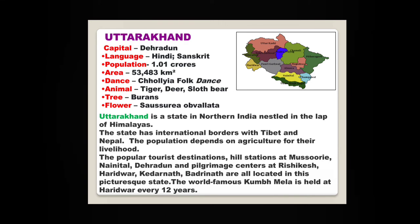Uttarakhand — capital Dehradun. Uttarakhand is a state in northern India, nestled in the lap of the Himalayas. The state has international borders with Tibet and Nepal. The population depends on agriculture for their livelihood. Popular tourist destinations include hill stations at Mussoorie, Nainital, Dehradun, and pilgrimage centres at Rishikesh, Haridwar, Kedarnath and Badrinath, all located in this picturesque state. The world-famous Kumbh Mela is held at Haridwar every 12 years.